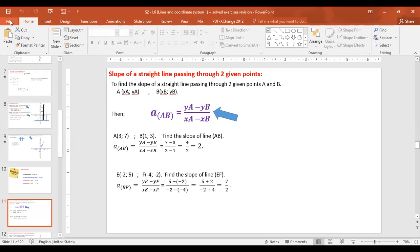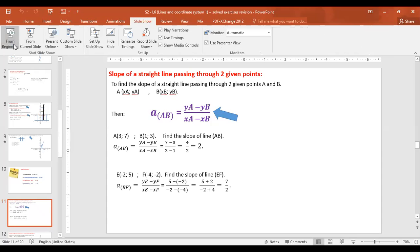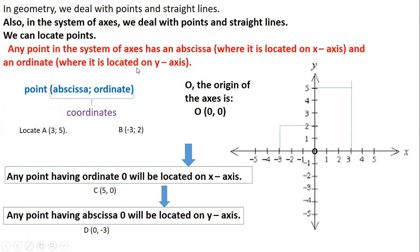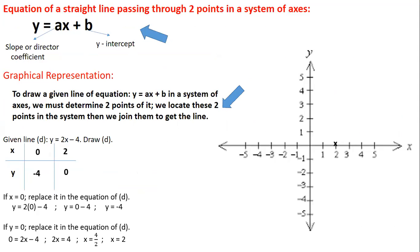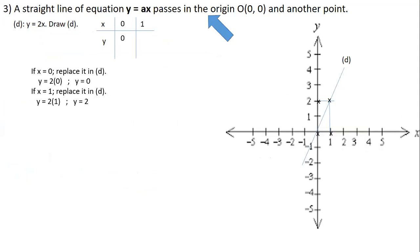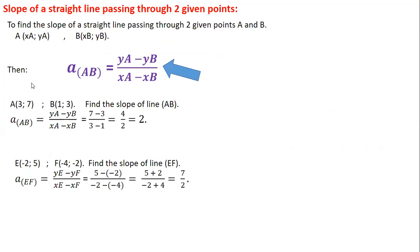This lesson is on the coordinate system. We are revising the rules of this lesson with exercises to be solved together. The last two rules we studied are: how we calculate the slope of a straight line. We said any straight line in the system of axes has a slope. If we are given a straight line passing through two points, we use the formula: slope of AB equals YA minus YB over XA minus XB.